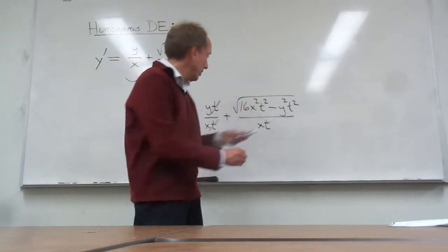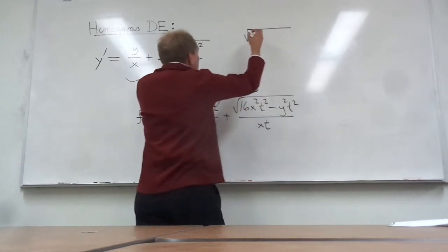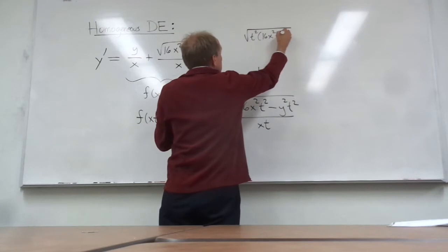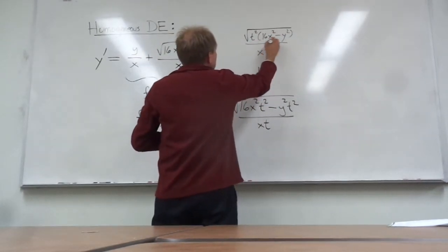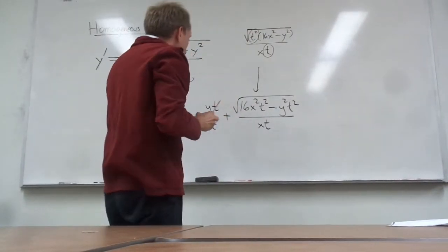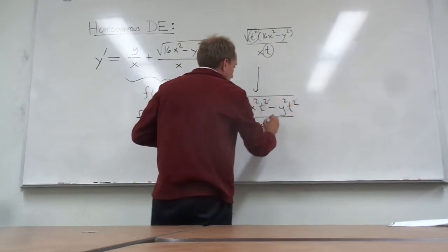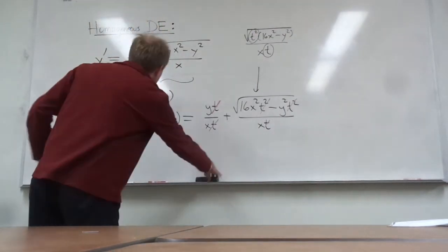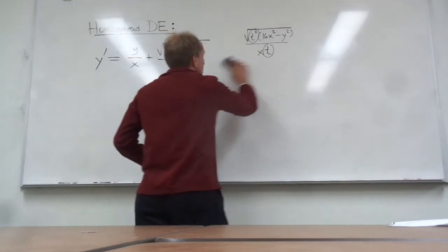Over here we would need to factor a t squared inside of that radical. And then we're taking the square root of it. So this little piece right here I can write the top as t squared times 16 x squared minus y squared. And when I look at the denominator of it, you see this t and this t squared can be canceled out. So indeed we have something where if we simplify it all of the t's would go away. So this is a homogeneous differential equation.